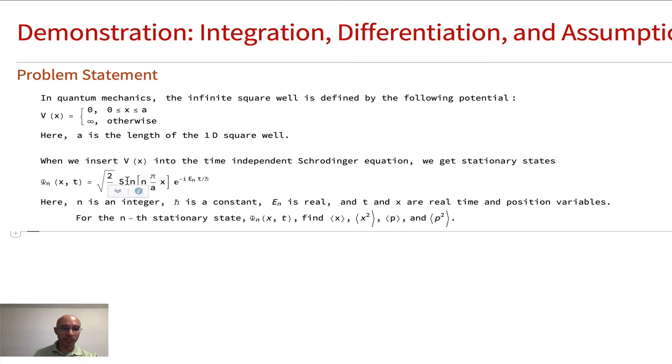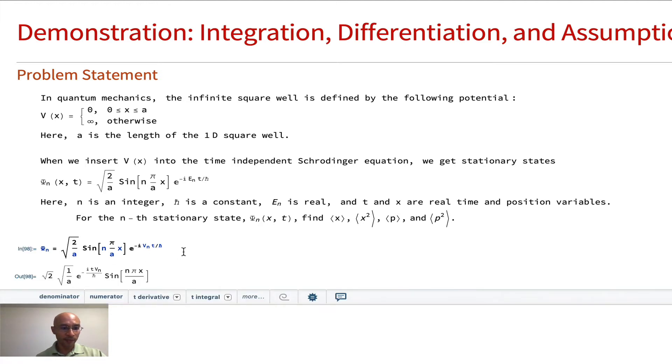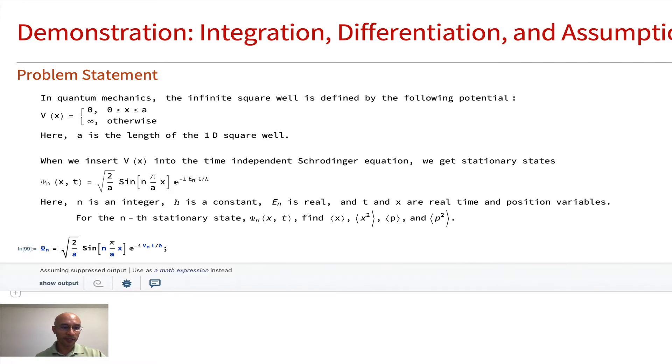First off, I'm going to define an expression for psi. I'm going to copy and paste, and I'm going to put in here a capital psi. So escape and then PSI, I'm going to do a control underscore, and I'm going to put here n. And one other thing I'm going to change from this expression is this E_n, I'm going to change to a v, because when I put in a capital E, Mathematica will interpret that as the exponential. So I'm going to store this expression in psi of n, and I don't really need to see it, so I'm going to suppress it with a semicolon.